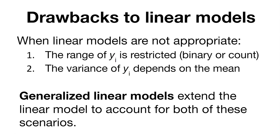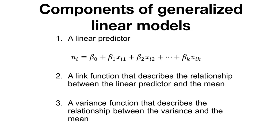Here are some components of generalized linear models. These are flexible generalizations of linear regression that allow the response variable to have an error distribution other than a normal distribution. The generalized linear model relates the linear predictor to the response variable using what we call a link function, which describes the relationship between the linear predictor and the mean value. The magnitude of the variance of each measurement is then a function of its predicted value, described by a variance function.